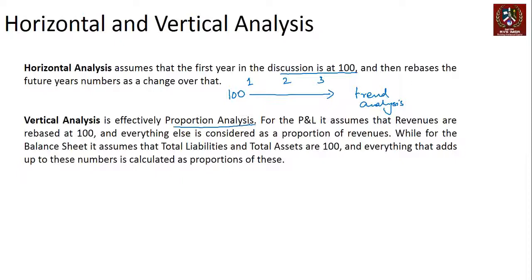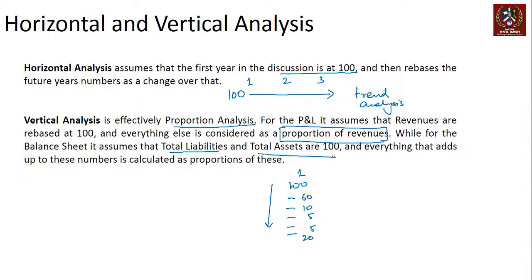Vertical analysis, on the other hand, is like proportion analysis. In year one you start with one hundred, then how does that hundred get constituted — sixty comes from somewhere, ten comes from somewhere, five and five and the remaining twenty from various points. For the P&L, it assumes that revenues are rebased at one hundred and everything else is a proportion of the revenues. For the balance sheet, it assumes total liabilities and total assets are one hundred, and everything adding up to those numbers is calculated as proportions.